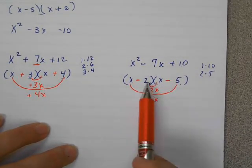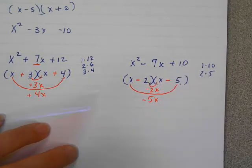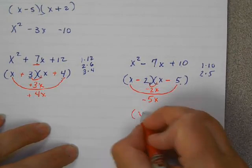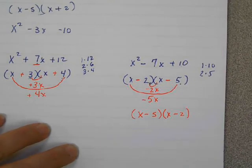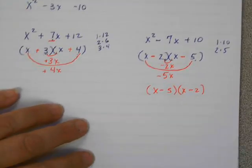And that would make sense, because negative 2 times negative 5 gives me positive 10. If you had the answer, x minus 5 times x minus 2, that's the same thing. It doesn't matter which order, as long as the signs are the same.